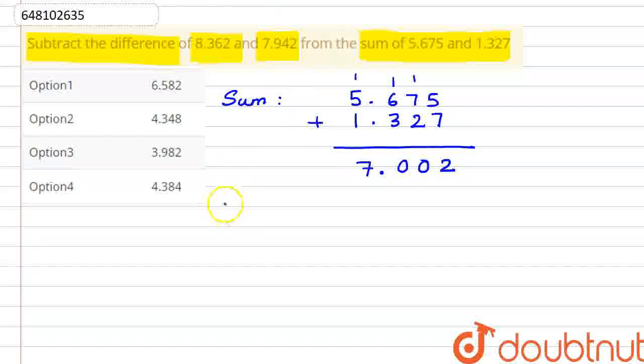Now secondly, we will find the difference. Our number is 8.362 and we have to find the difference with 7.942. We have to find the difference between both, that is subtraction.